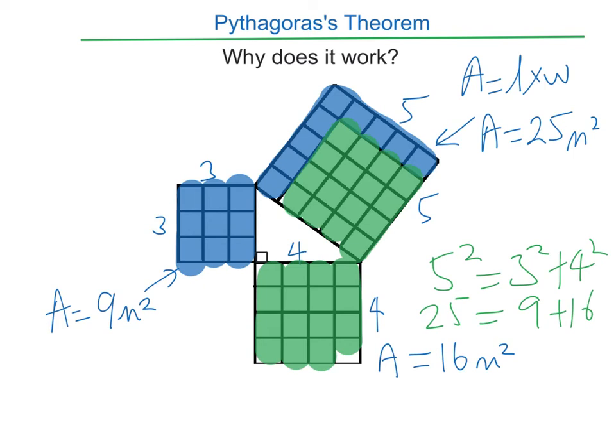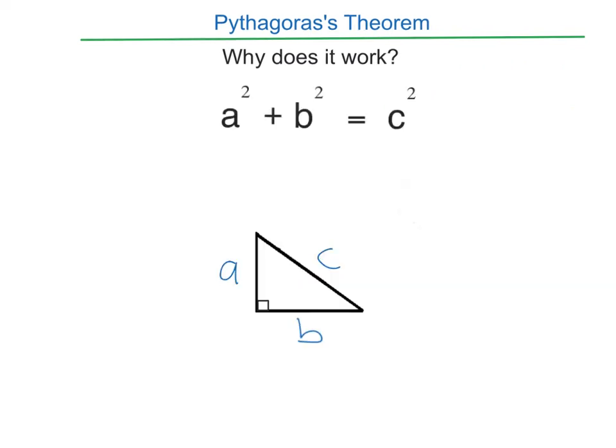So in math, when this happens, we generalize and write a formula. So going back to our original triangle, if I do the squares for this triangle, like I did for the three, four, five triangle, the area of this one is going to be c by c, c squared.